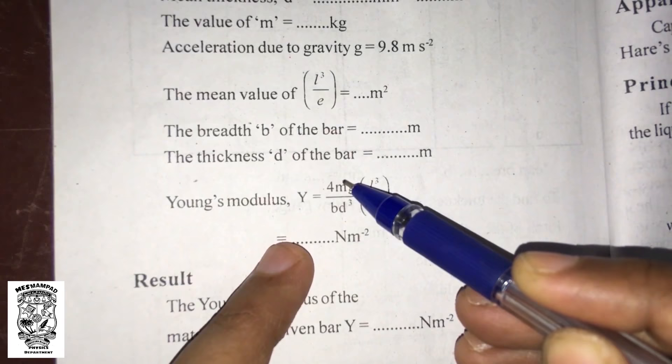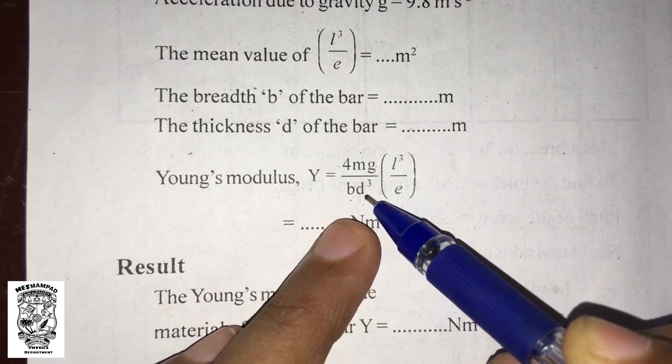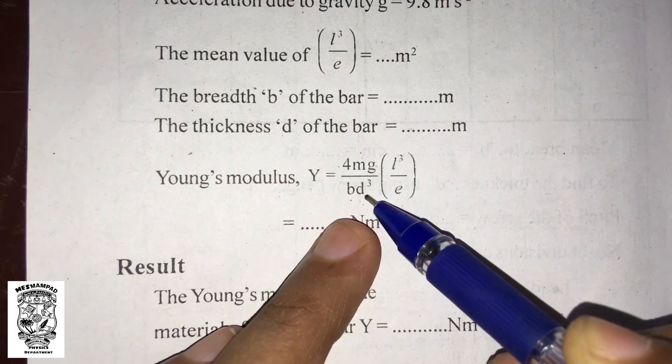M is the mass of the weight, that is 50 grams. G is 9.8 meters per second squared. B, breadth of the beam is measured. D, thickness of the beam is measured. And L cubed over E, the mean L cubed over E value is substituted here. Then, we will get the Young's modulus of the beam.